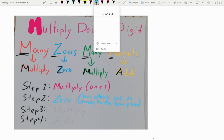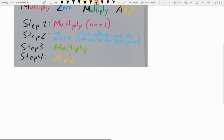And then of course, step three, you're going to multiply the numbers in the tens place. And then finally, step four, you will add the numbers that you have created in the ones place and the numbers that you have created in the tens place.